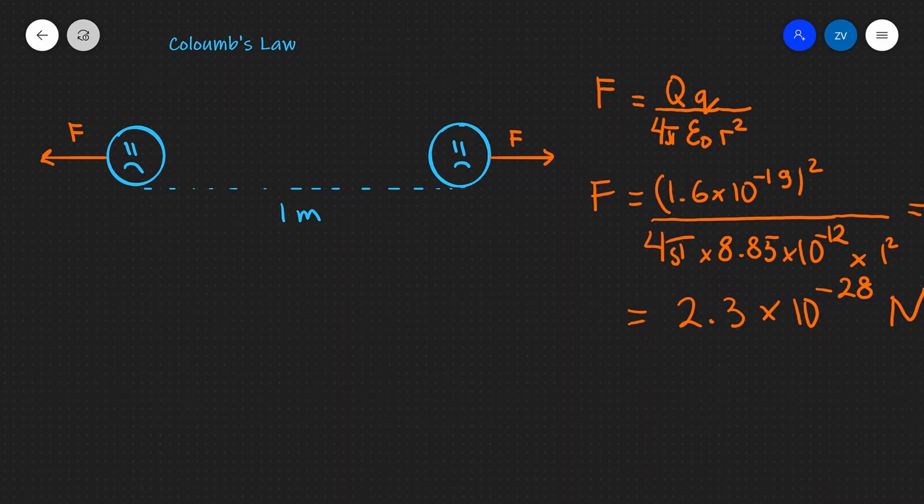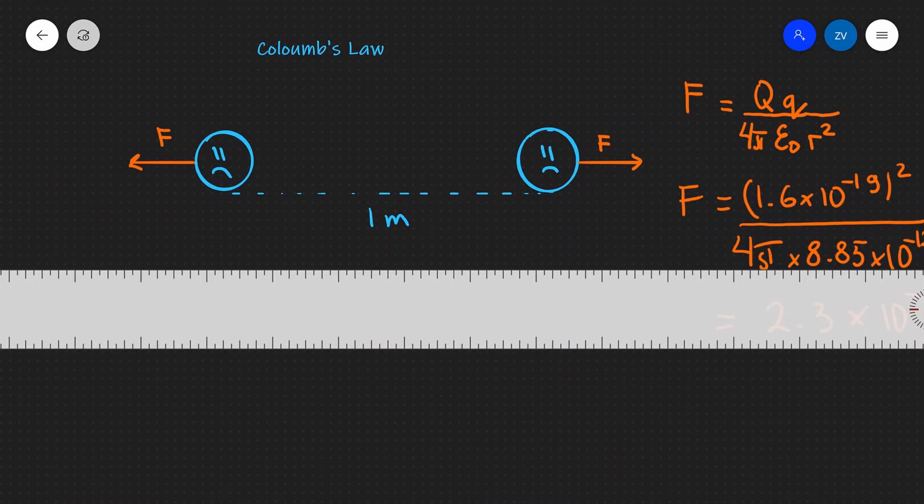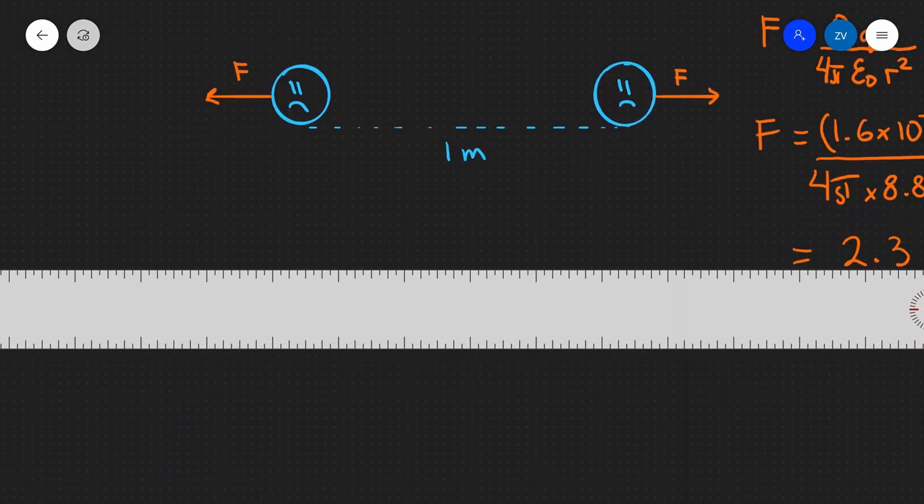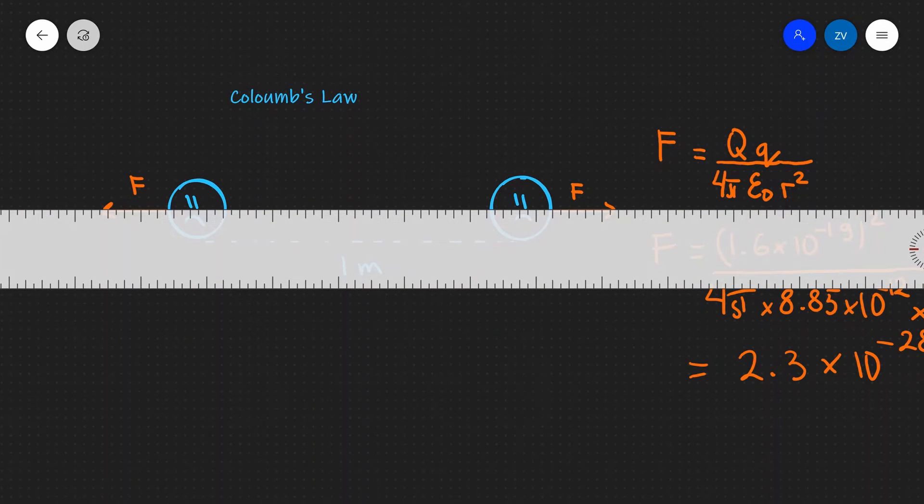Now let's compare this with another force acting on this system, namely the gravitational force. Okay, so we know that those two electrons are going to repel because of this electric force, however there's also going to be a force of attraction because of the gravitational force.